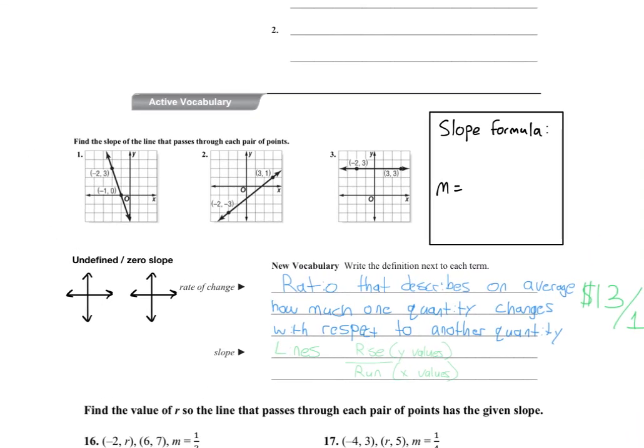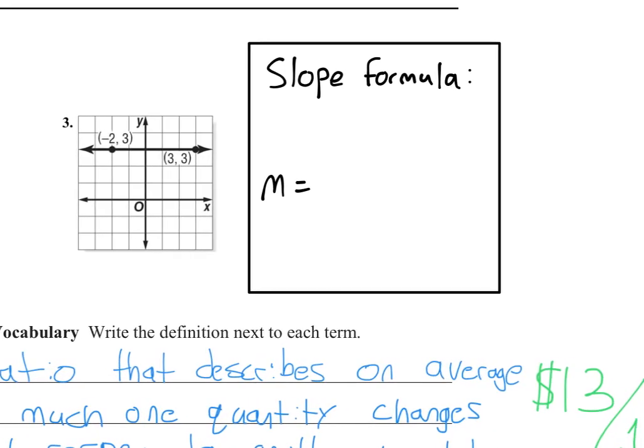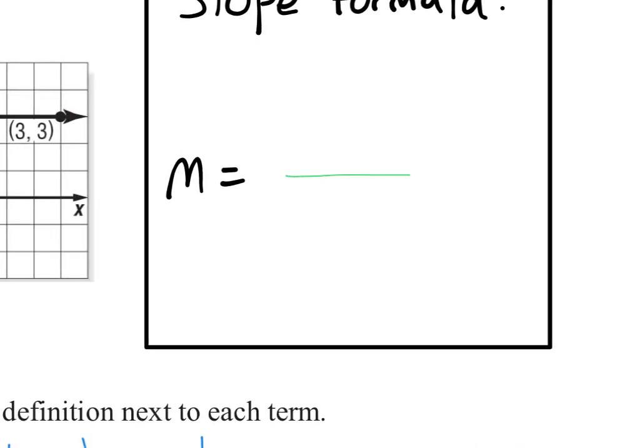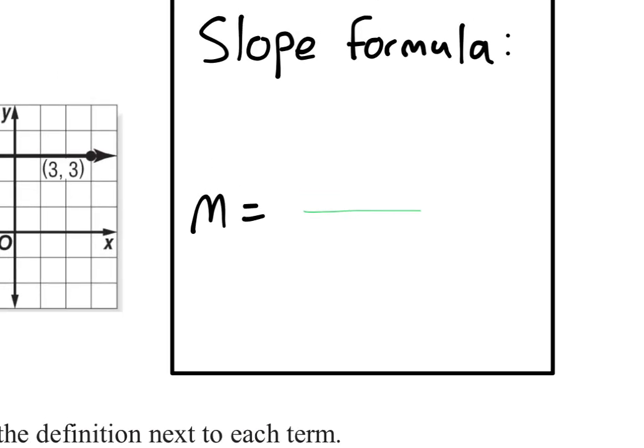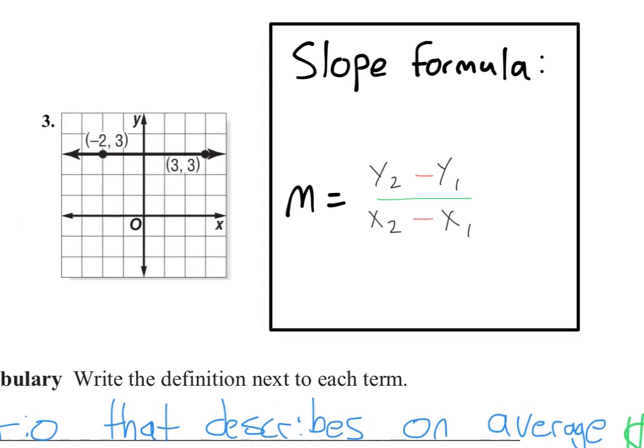So, here is the slope formula. M is going to stand for slope for us as we start to use it in some different formulas. This formula brings two subtraction signs with it. Those two subtraction signs will always come. And what it's going to do is it's going to be y2 minus y1 over x2 minus x1.